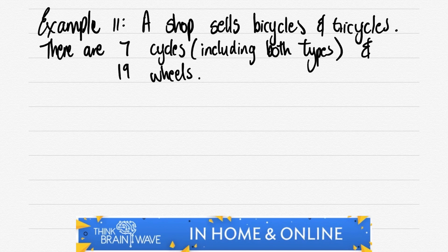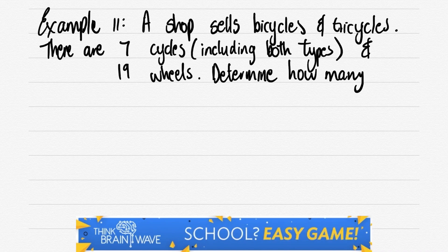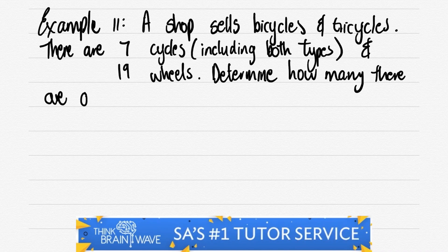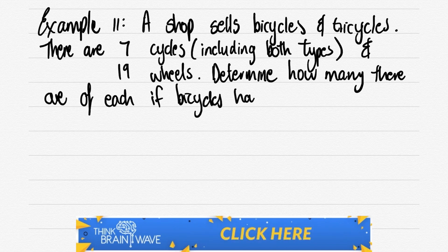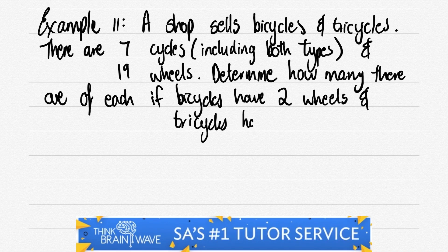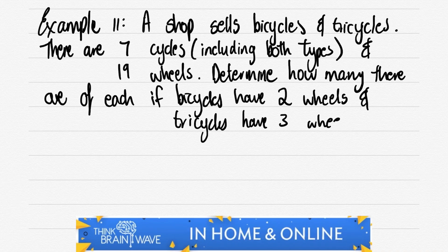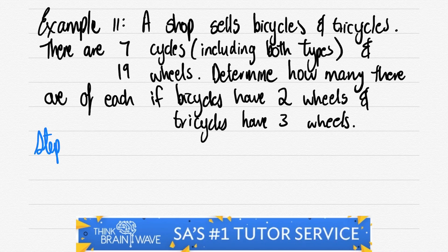We've got a shop that sells bicycles and tricycles. There are seven cycles total — this includes both bicycles and tricycles. So there could be, for instance, two bicycles and five tricycles making up the seven. And then there are 19 wheels. You need to start thinking: there are three wheels on a tricycle and two on a bicycle. Let's determine how many there are of each.